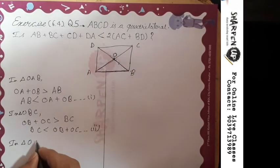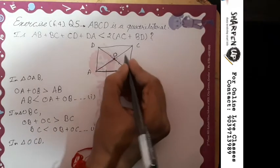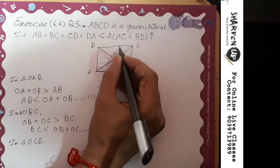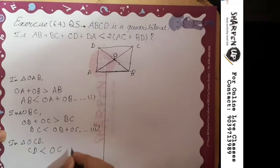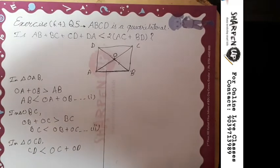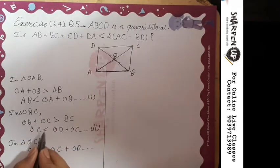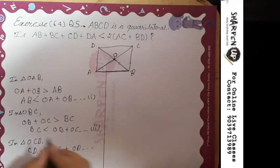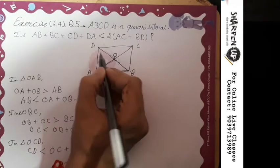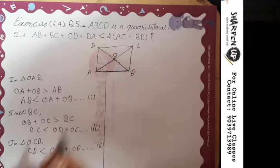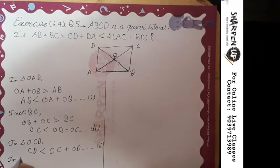Now take our third triangle OCD. The sum of two sides is greater than the third side, so CD is less than OC plus OD. You can also first write OC plus OD greater than DC and then rewrite it.